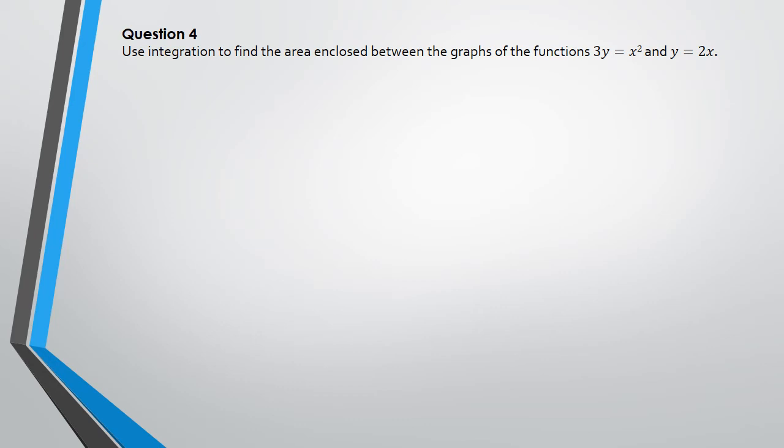All right guys, so in this question we've been asked to find the area enclosed between these two graphs. Now let's say you've got no idea what these two graphs look like, but the good thing is just drawing it real quickly or even just sketching it. So what we have here is we have 3y equals x squared, so we can actually say y equals one third of x squared, and y equals 2x.